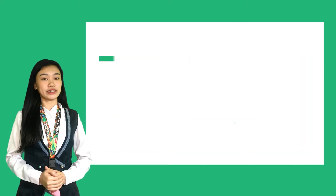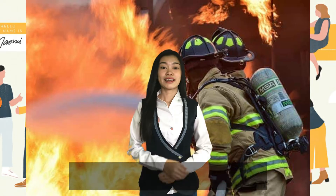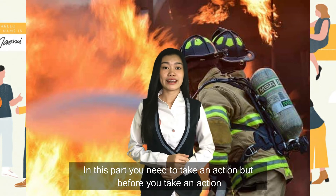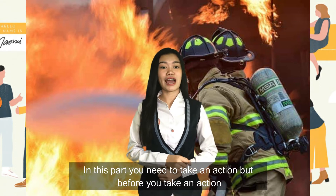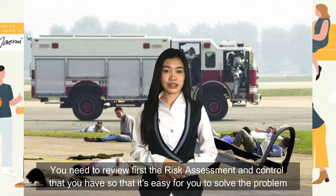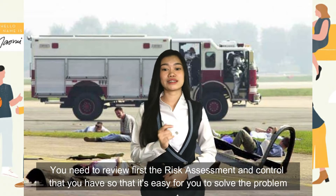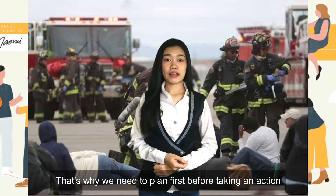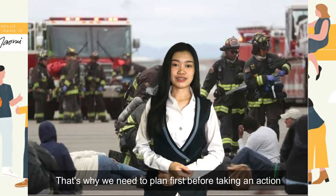Third is emergency, fire, and accident control. In this part, you need to take action. But before you take action, you need to review first the risk assessment and control that you have, so that it's easy for you to solve the problem. That's why we need to plan first before taking action.